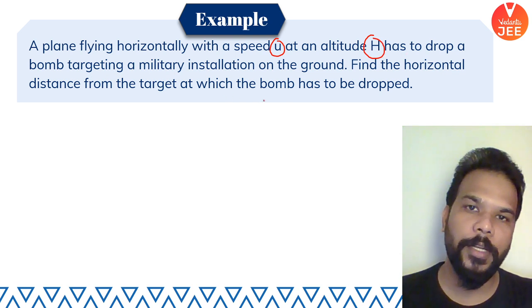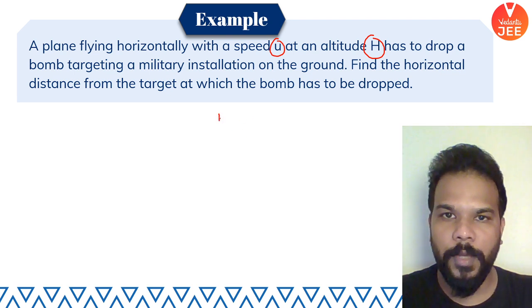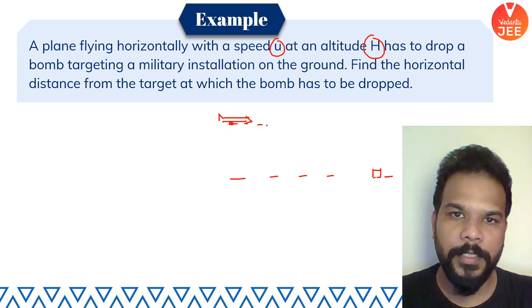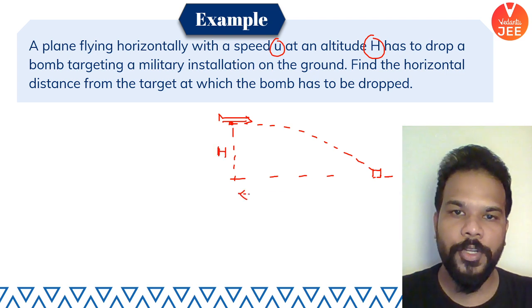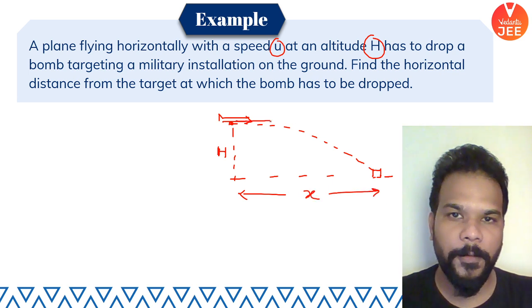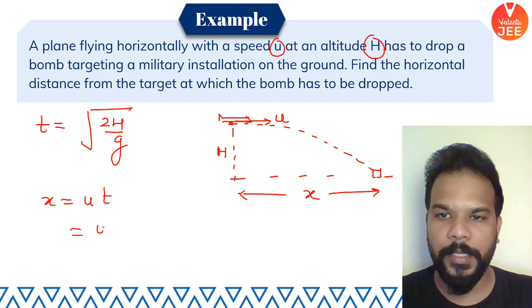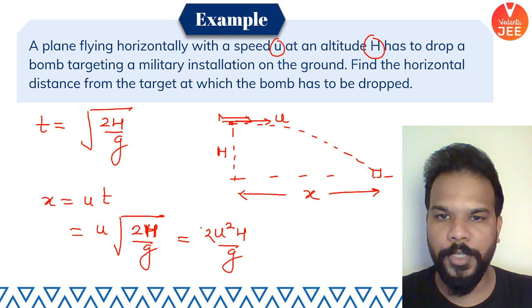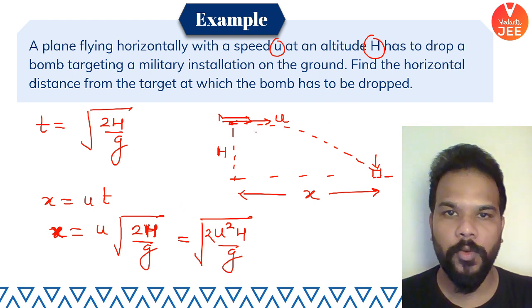Next question: a plane flying horizontally at speed u at height h has to drop a bomb on a military installation. Find the horizontal distance from the target at which the bomb must be released. Time to hit ground: T = √(2h/g). Horizontal distance: x = u·T = u·√(2h/g) = √(2u²h/g). This is the distance ahead of the target where the bomb must be dropped.